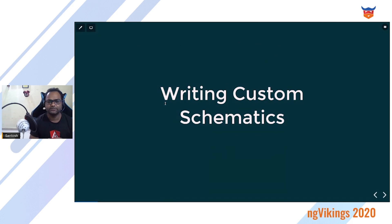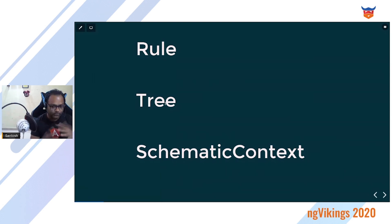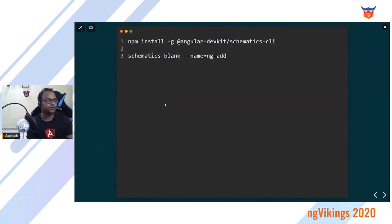How do you write custom schematics? It's really simple — there are three things to understand. First is a Rule: a rule takes a Tree and returns another Tree. The Tree is your virtual workspace — a virtual file system on which you run operations like creating and modifying files. Schematic Context is basically the environment every schematic runs inside — it can be your application or a library — and it gives you APIs like logger and many more helper functions.